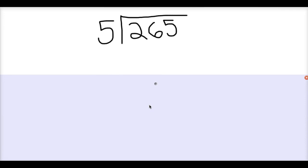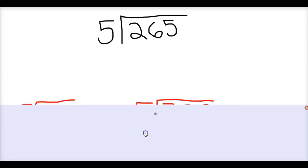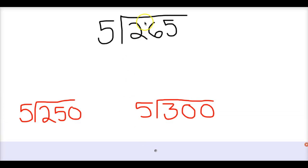First, I want us to look at this division problem. If I have 265 divided by 5, what is a way that I could estimate? Well, this is where you have to use compatible numbers. There are two really good options: you can change 265 to 250, or you could change 265 to 300. The reason I chose these two numbers is because 25 is a multiple of 5, and 30 is a multiple of 5. So that's going to make it real easy for me to estimate.